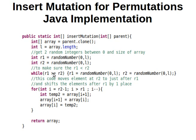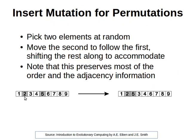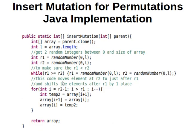We don't want r1 to be equal to or larger than r2, because as we mentioned, this is r1 and this is r2. We want to bring the element at r2 to come next to the element at r1. So we make sure that r1 is less than r2, and then we loop through the elements.